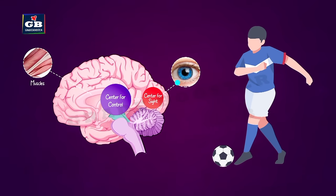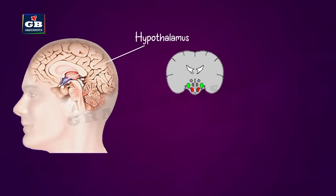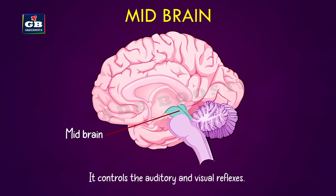Information from different sense organs is analyzed and compared with information already stored in the brain. Based on this analysis, the forebrain takes a decision and sends it to the area controlling voluntary muscles. For example, when playing football, the eyes send information about the ball's position; after analysis, a decision is made and muscles are directed to kick the ball with the right force and direction. The sensation of hunger and feeling full is also controlled by a separate area of the forebrain. The midbrain controls visual and auditory reflexes and has a center for controlling movements of the eyes and eyelids.